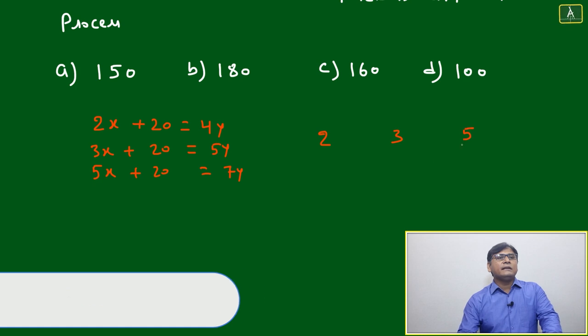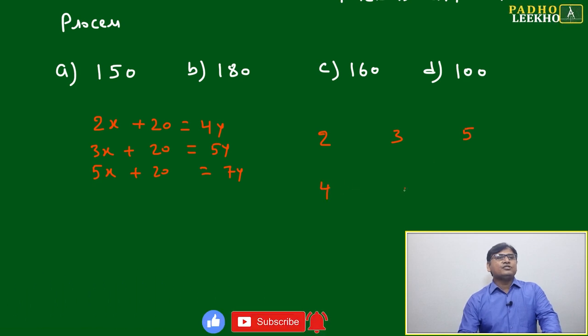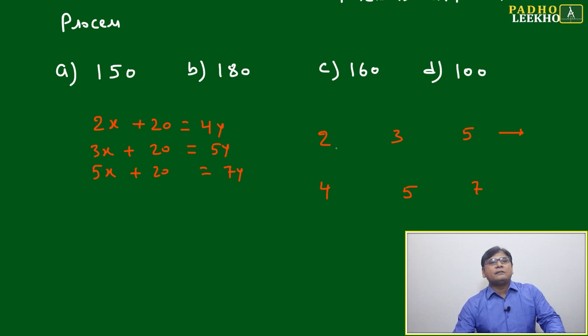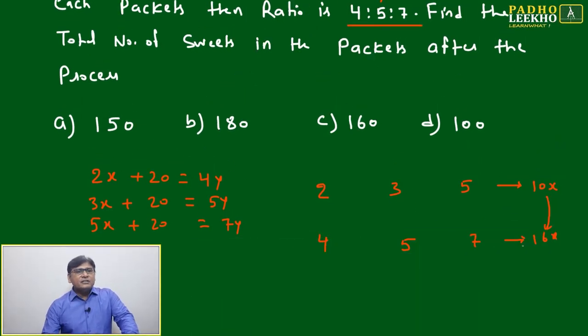The ratio 2:3:5 is changing to 4:5:7. Look at the base ratios: 2 plus 3 plus 5 equals 10, so something will be in the form of 10x. Here 4 plus 5 plus 7 equals 16, so something will be like 16x based on this.